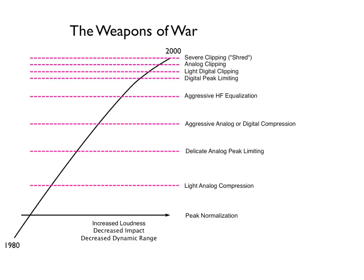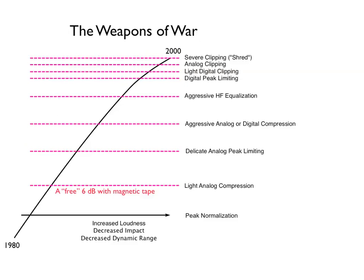But soon, engineers discovered peak normalization. At that time we were very comfortable setting just the highest peak of the material to full scale — there might have been just one or two peaks in the entire program hitting full scale. The next thing that happened was that somebody discovered if we copied the signal to analog tape and transferred it to digital audio peaking it to full scale, we could get a free 6 dB loudness increase. That's because the peak to average ratio of analog tape is about 14 dB, or perhaps 12 dB if you saturate it more.